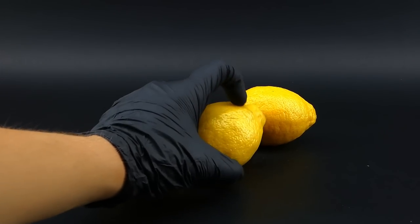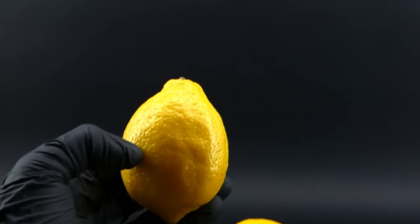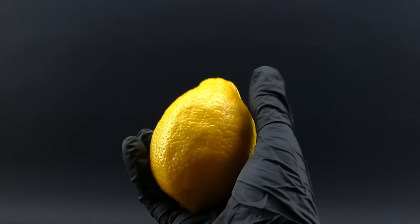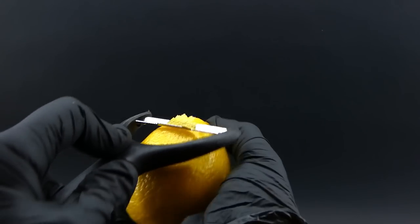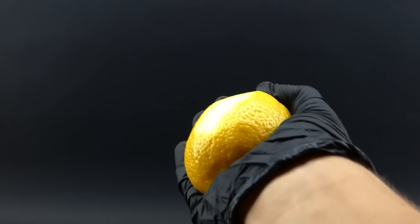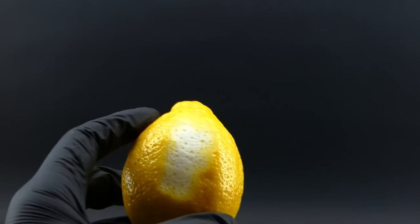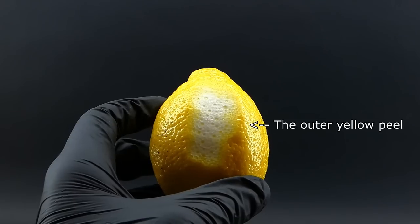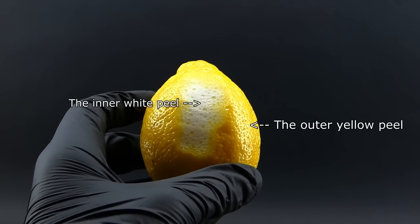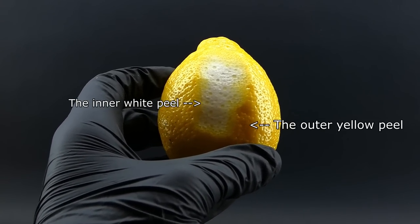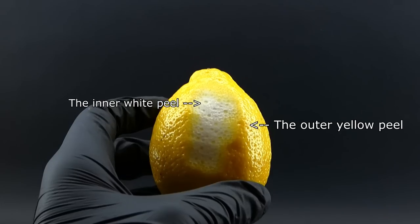They look like, well, lemons, and to see how they smell, I got one and shaved off a small amount of the peel from it. And as you can see, the whole lemon peel is divided into two portions, which are the outer yellow peel and the inner white peel. For this project, I am more interested in the yellow peel since it is where most of the lemon essential oil is.